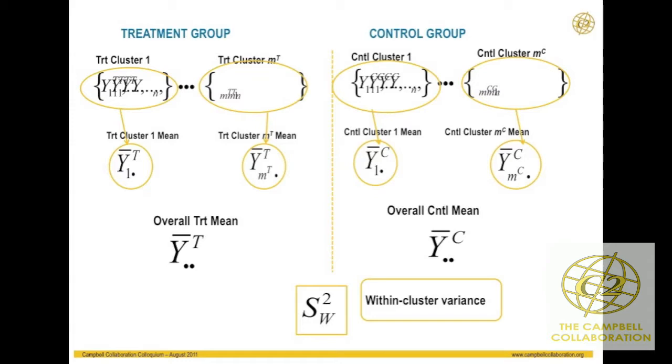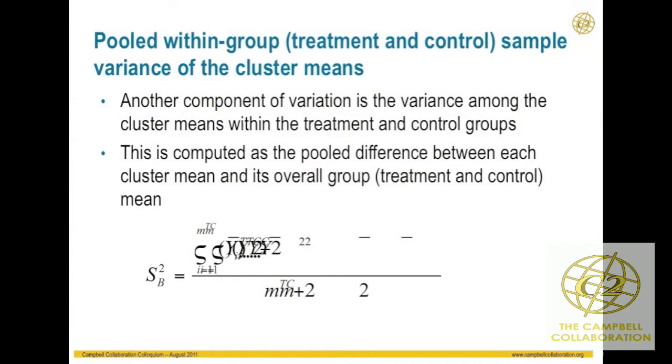In typical analysis of variance fashion, we assume the within-cluster variance is similar across groups. A second component of variation is the between-cluster mean variation — the differences between each cluster mean and the total treatment group or control group mean. That's the variation among the cluster means, and we call it S-squared B — the between-cluster variation.